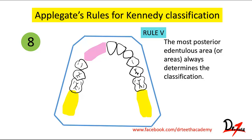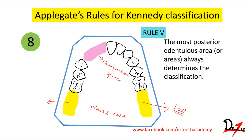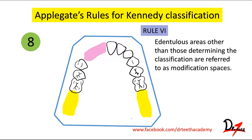Rule five: the most posterior edentulous area or areas always determines the classification. Here you can see these two posterior areas determine the classification — this is a bilateral edentulous area so it is Class I. Rule six: edentulous areas other than those determining the classification are referred to as modification spaces. The anterior single space here is the modification space and does not determine the class.